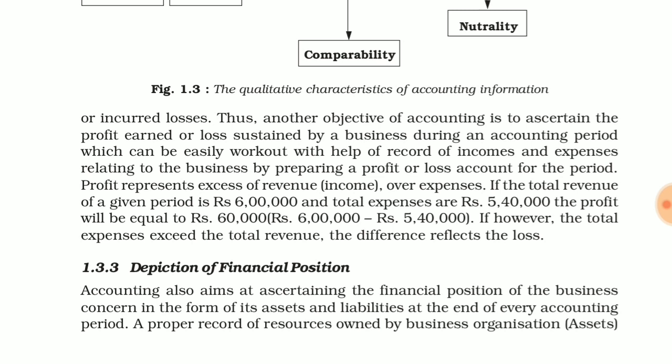Profit represents excess of revenue. Profit means that you will have more revenue than your expenses — your expenditure will be less and revenue will be more. If the total revenue of a given period is 6 lakhs and you generate that revenue in three months, and your total expenses are 5 lakhs 40 thousand, then profit is simply 60 thousand.